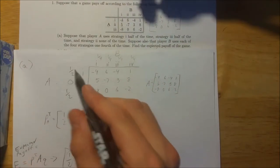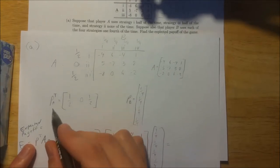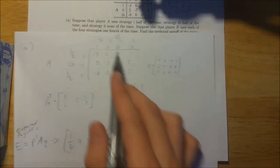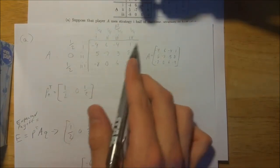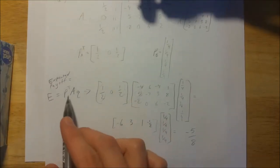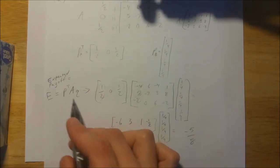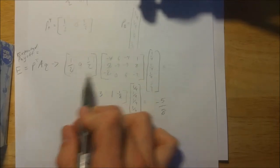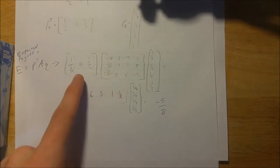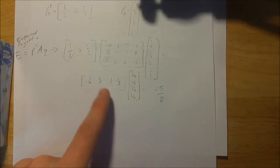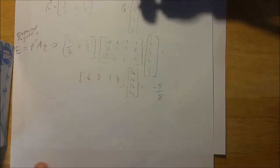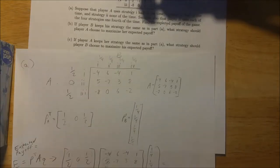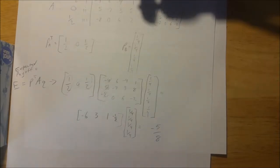So find the expected payoff of the game. The probabilities of player A using each of the strategies are transposed into a vector, and player B's probabilities are a column vector. The matrix of the payoff is matrix A. The expected payoff is player A's probability vector transposed, multiplied by matrix A, multiplied by player B's strategy vector. When you do the matrix and vector multiplication, you get a 1×4 result, and then multiplying that 1×4 by the 4×1 vector gives you negative five-eighths as the expected payoff of the game. A negative value indicates that player B will have the payoff, and five-eighths is the value of the payoff they will receive — their utility points.